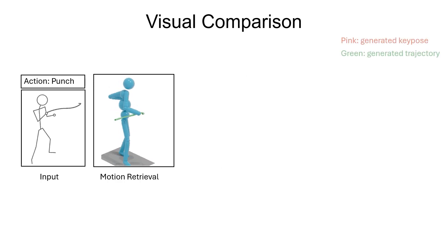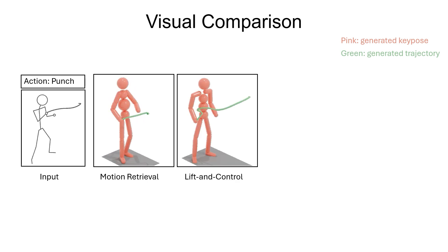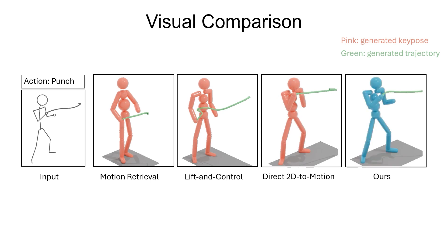We have compared our method to a few baselines. Given this punch storyboard, motion retrieval method can obtain a motion in high realism, but the punching hand is wrong and it fails to conform to the sketch pose and trajectory. Both the key pose and trajectory of lift-and-control method are wrong, due to the inaccuracy of lifting 2D to 3D. Direct 2D to motion method produces the worst motion because of the considerable domain gap between 2D sketches and 3D animations. Our result outperforms all competitors. The animation is of high quality in terms of motion realism, control accuracy, and text motion matching.